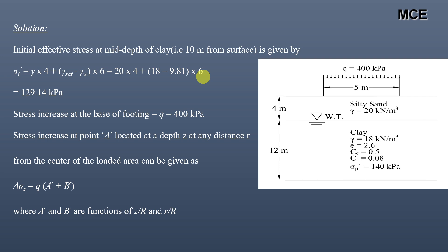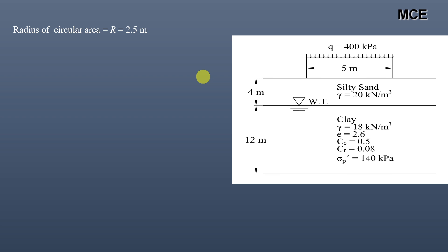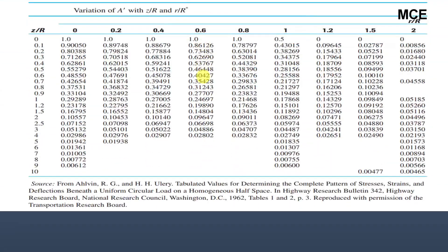For this footing, radius R = 2.5 meters (since diameter is 5 m). The depth from the bottom of the footing to mid-depth of clay is 10 meters. For the center of the footing, radial distance r = 0, so z/R = 10/2.5 = 4 and r/R = 0. We then use the chart to get the value of A′ for varying z/R and r/R.